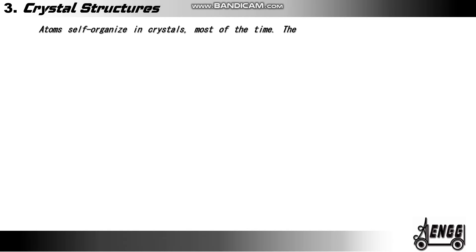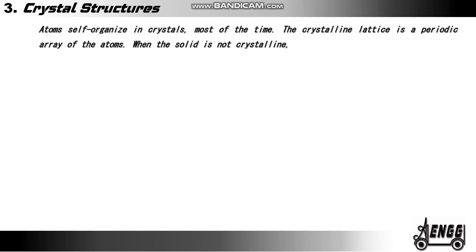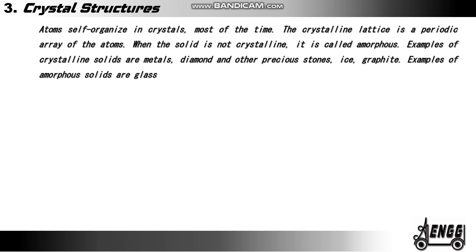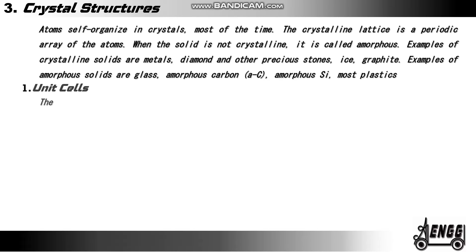Atoms self-organize in crystals. Most of the time the crystalline lattice is a periodic array of atoms. When the solid is not crystalline, it is called amorphous. Examples of crystalline solids are metals, diamond and other precious stones, ice and graphite. Examples of amorphous solids are glass, amorphous carbon, amorphous silicon and most plastics.